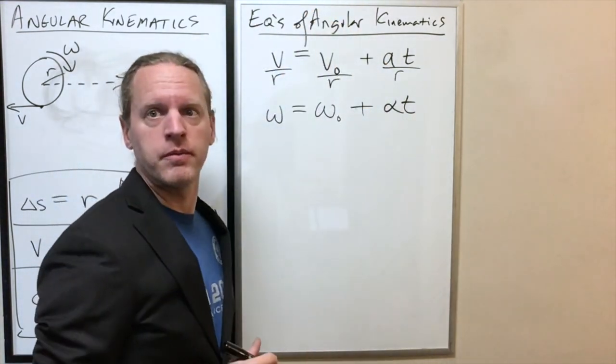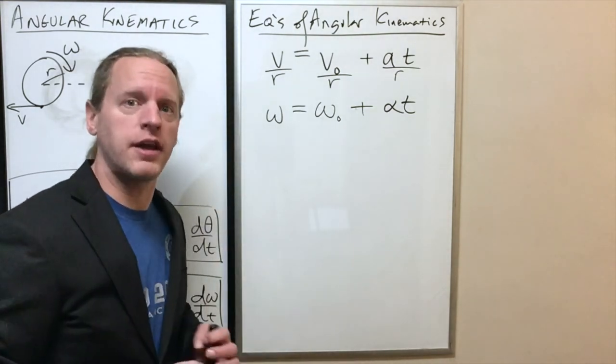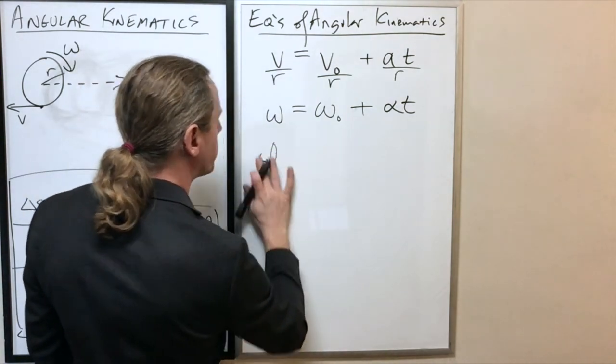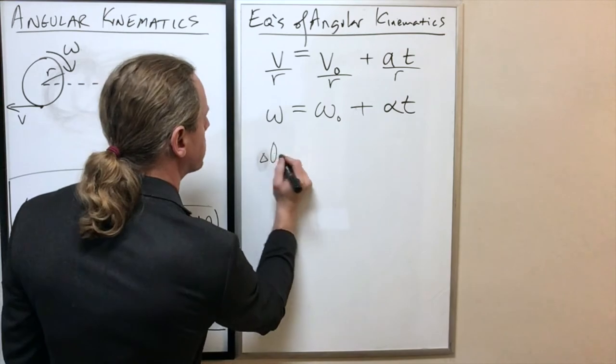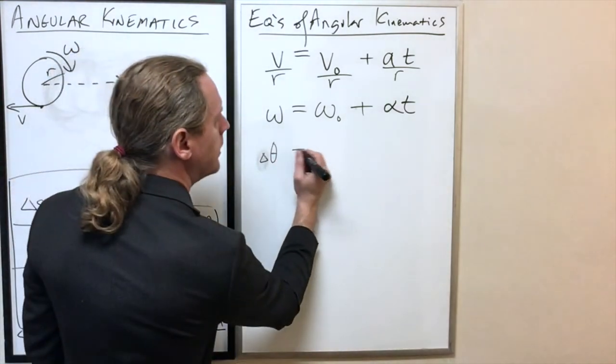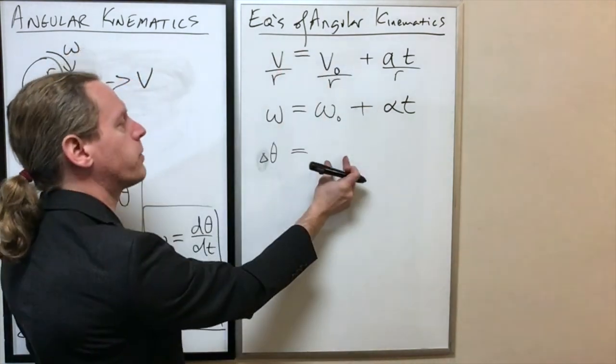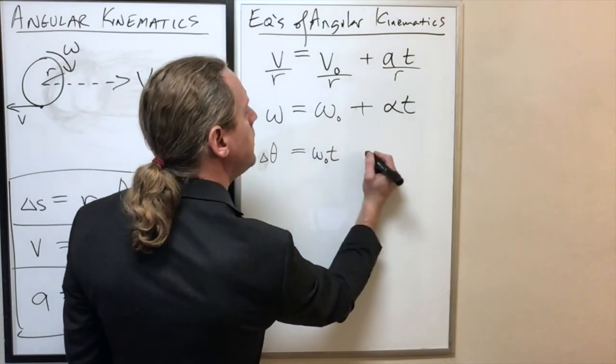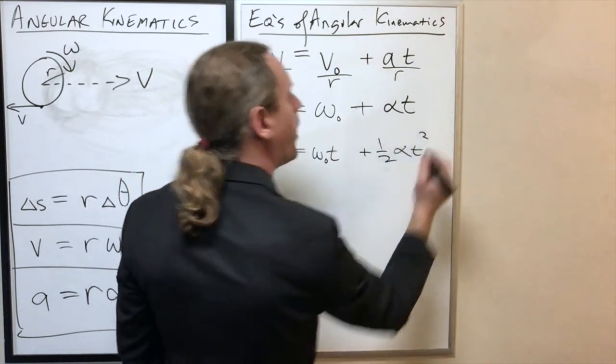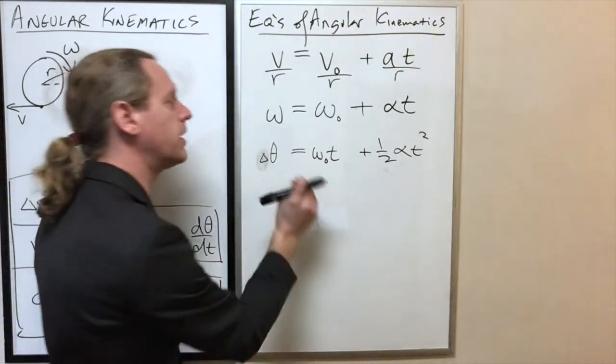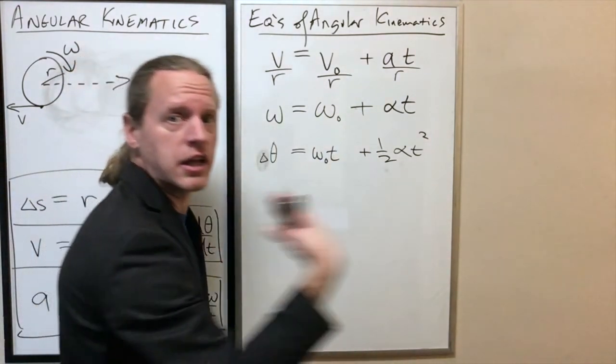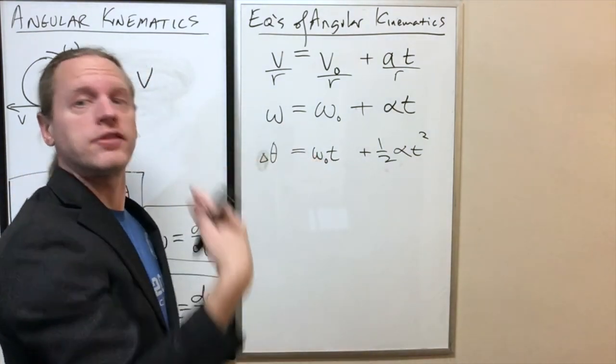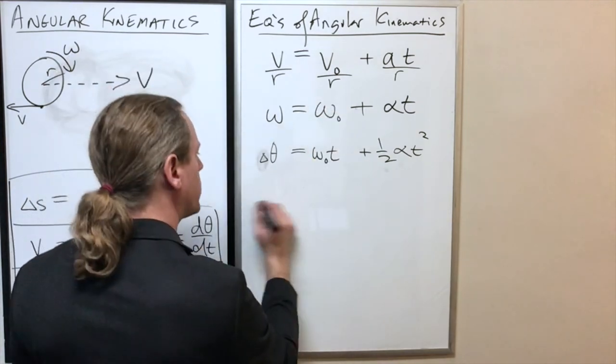The other three equations are exactly the same. Our second equation: delta theta or a change in angle is whatever our initial angle was, plus omega naught t plus one half alpha t squared. Notice how I'm literally just replacing the original linear motion variable with the angular one - delta x goes to delta theta, v naught goes to omega naught, and so on. Then the other two I'll write up real quickly here.